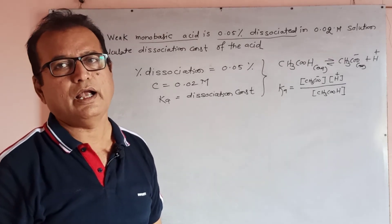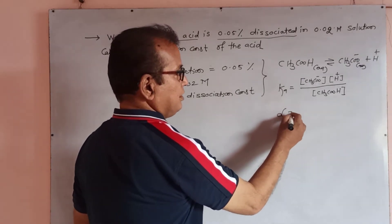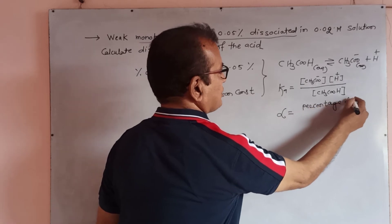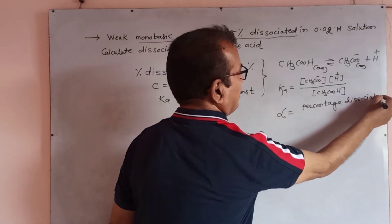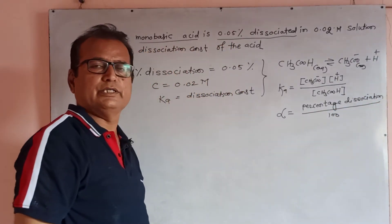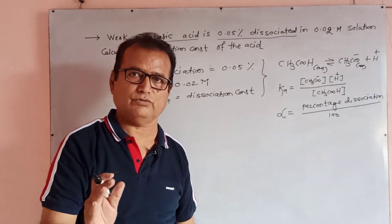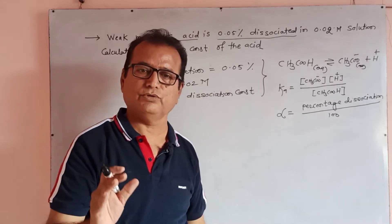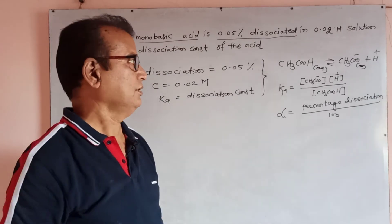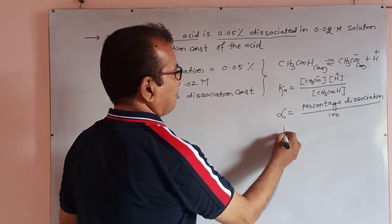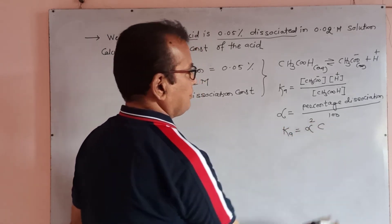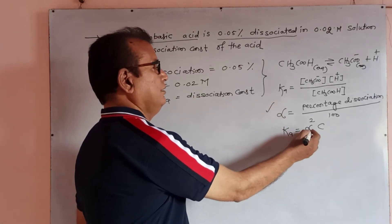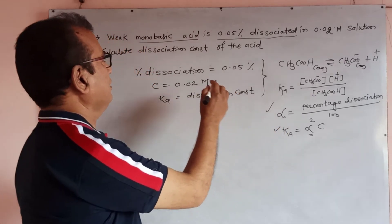Ka is the dissociation constant determined with respect to the dissociation phenomenon. For a weak acid which is very less dissociated, the Ka value is calculated using the degree of dissociation, alpha. Alpha is degree of dissociation, which equals percentage dissociation divided by 100. It is the fractional part — how much percentage of that weak monobasic acid has dissociated divided by 100. Using Ostwald's dilution law, Ka equals alpha squared times C. This is our formula — Ka = α²C. First determine alpha, then put alpha and C values to calculate Ka.